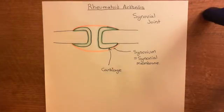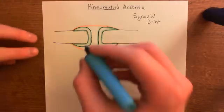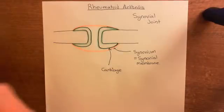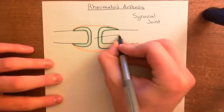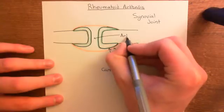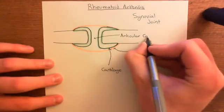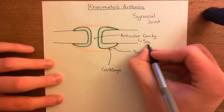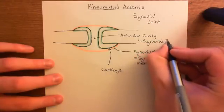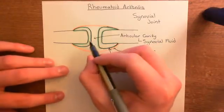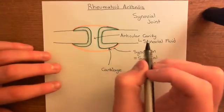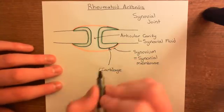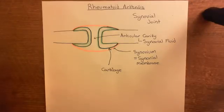The synovial membrane is not the only component of the joint capsule. The synovial membrane is physiologically important — it's going to make the synovial fluid within the articular cavity. This cavity contained within the synovial membrane is the articular cavity, and it's filled with synovial fluid, which is there to lubricate the two joint surfaces so they can move over one another without too much friction. This synovial fluid is produced by the synovial membrane.